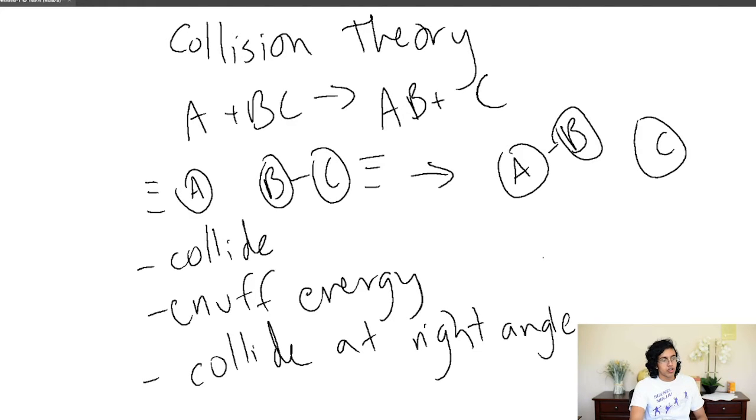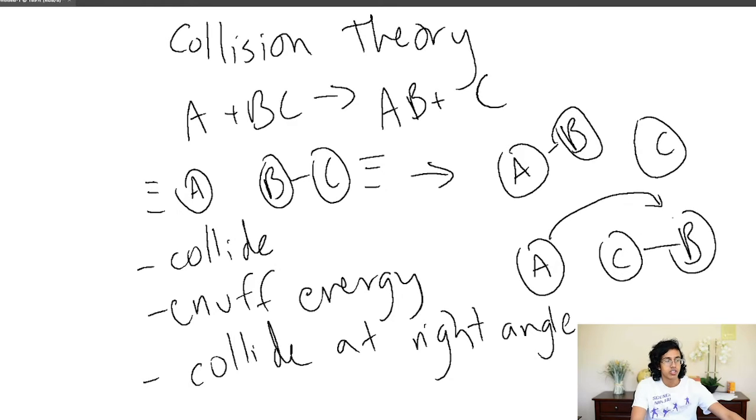So A and BC have to collide at the right angle for them to get a home run and become AB plus C. So it kind of makes sense if you look at it this way. Let's say that A collides with BC but it's flipped this way. Then it doesn't make sense that this A is just magically going to transport and form a bond with B. It's just gonna hit the C and bounce off. So in order for them to actually create the reaction, the B has to be over here, they have to collide over here, and the C is over here. So there is a specific direction in which they have to collide.